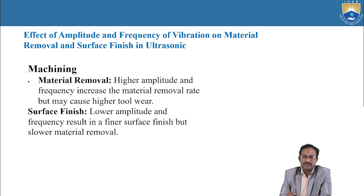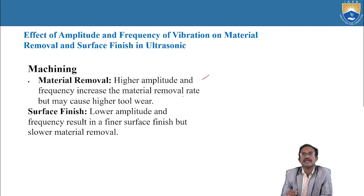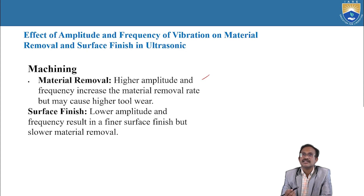Effect of amplitude and frequency of vibration on material removal and surface finish in ultrasonic machining. Material removal: higher amplitude and frequency increase the material removal rate but may cause higher tool wear. Surface finish: lower amplitude and frequency result in finer surface finish but slower material removal. This is similar to feed rate setup in a lathe machine — low feed rate gives better surface finish but takes more time.